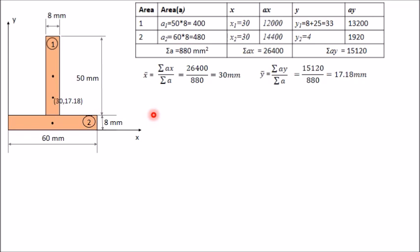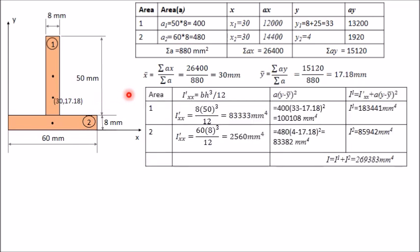Now calculate the moment of inertia with respect to the centroidal x-axis — an axis passing through the centroid of the composite figure, parallel to AB. We prepare a new table. The moment of inertia of a rectangle about its centroidal axis is bh³/12, where b is the side parallel to the given axis.